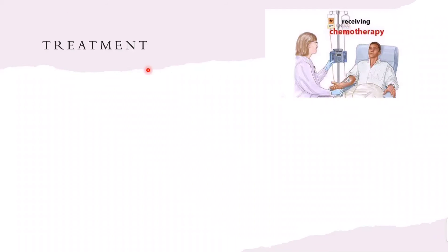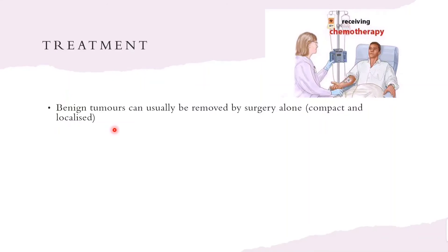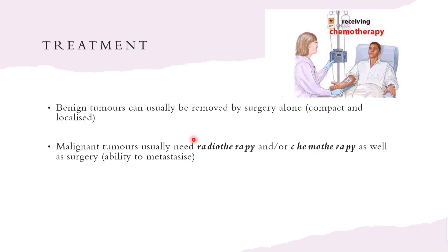Differences in treatment: benign tumors are usually removed by surgery alone, because they are compact and localized — all tumor cells can be removed in one surgery. Malignant tumors usually need to be followed up by radiotherapy and/or chemotherapy. Even after removing a primary tumor surgically, you don't know whether the malignant tumor has metastasized to other parts of the body, so you can't be sure all rapidly dividing cells with the mutation have been removed.